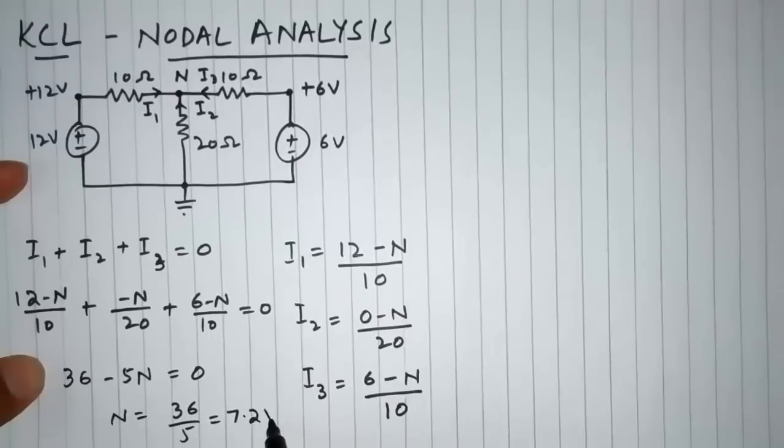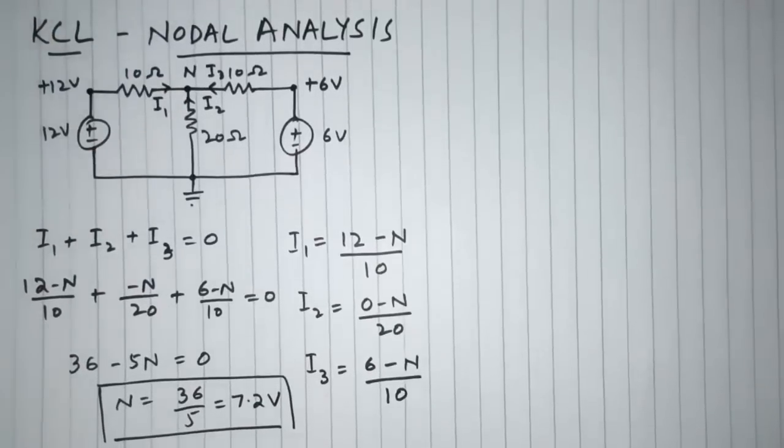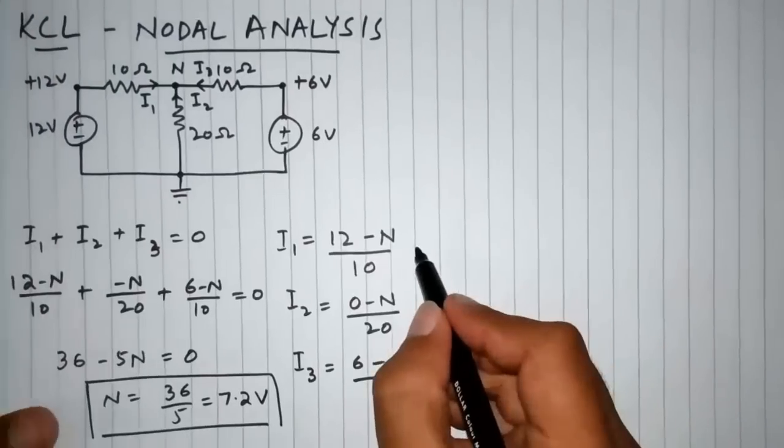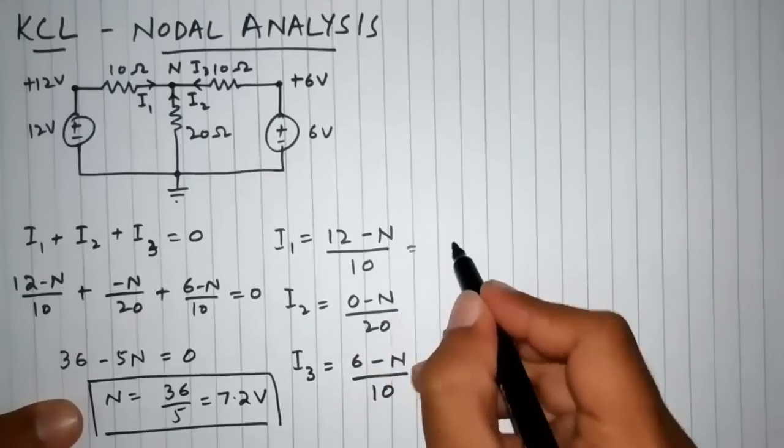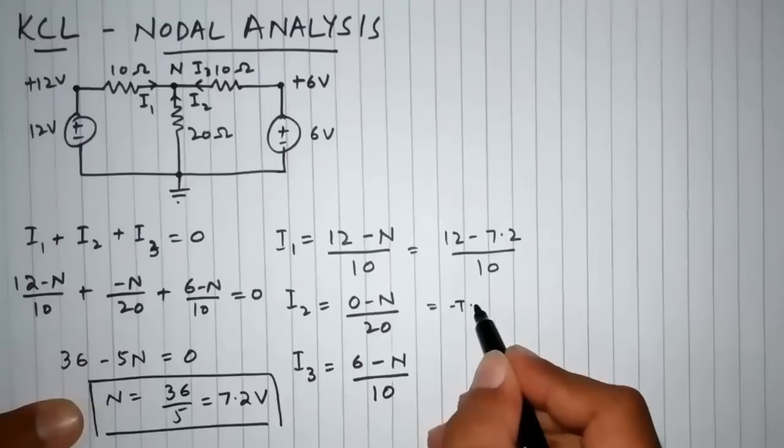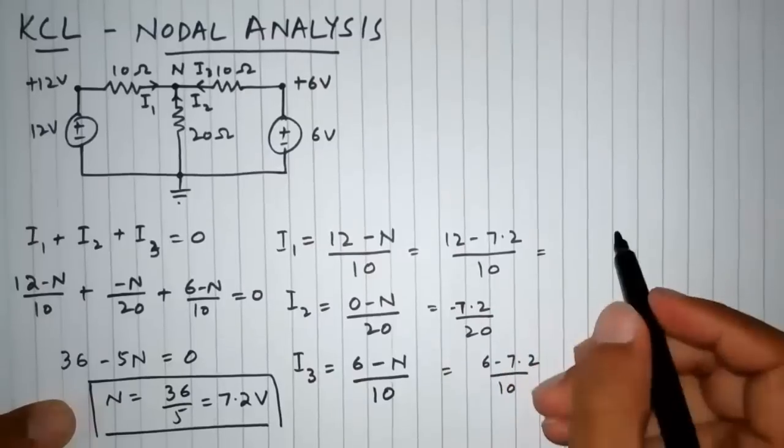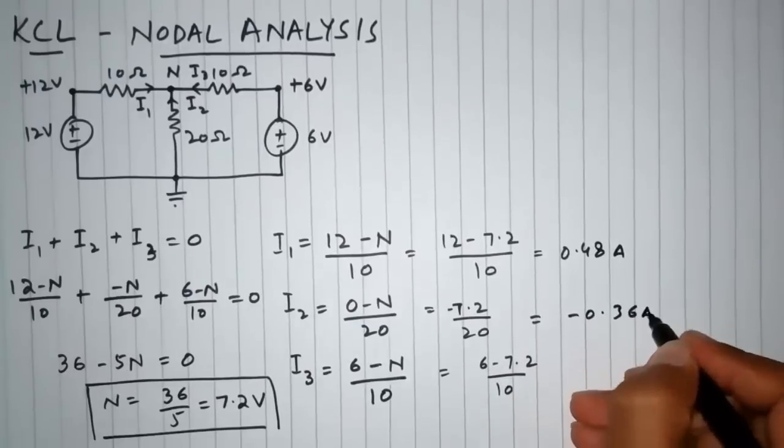Now we have found the voltage at this node. We have solved the circuit for all the voltages. Now we need to find the currents that are present in each of these branches. We will simply use the formulas for all three, and we have the only unknown variable which was N. I₃ equals (6 - 7.2)/10, I₁ equals (12 - 7.2)/10, so the answer will be 0.48 amperes. This is equal to -0.36 amperes, and this is equal to -0.12 amperes.